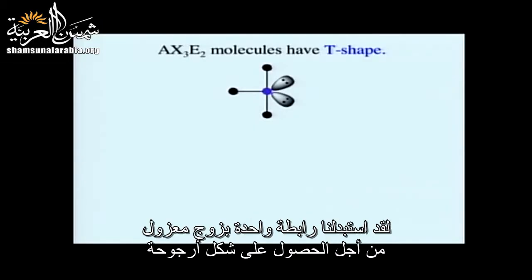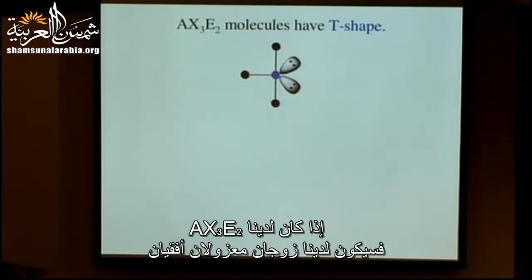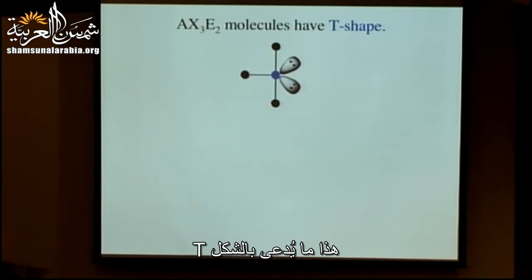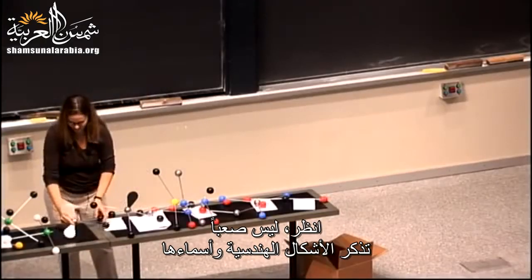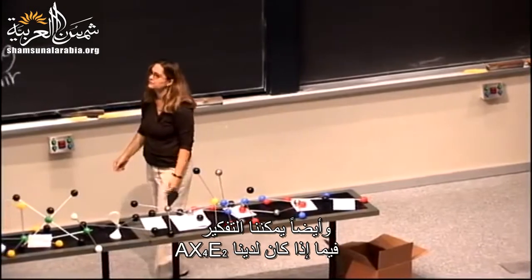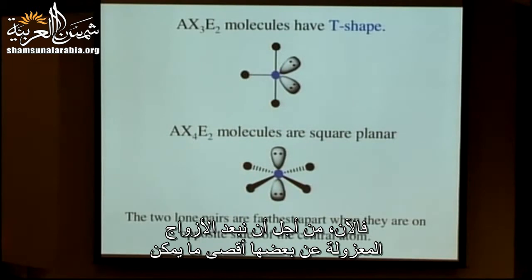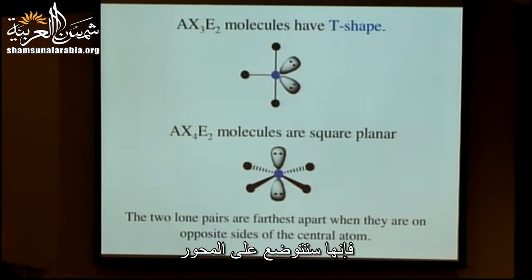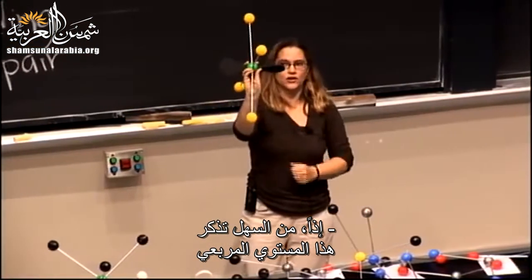If we take AX3E2 — two equatorial lone pairs — this is called T-shaped. For AX4E2, in order to get the lone pairs as far from each other as possible, they go to the axial positions, and this is called square planar.